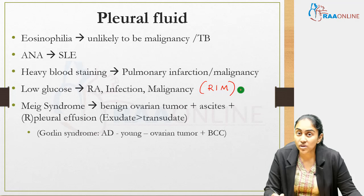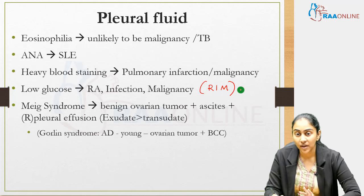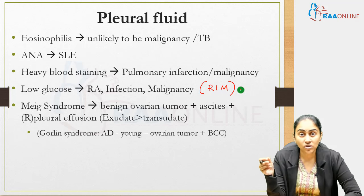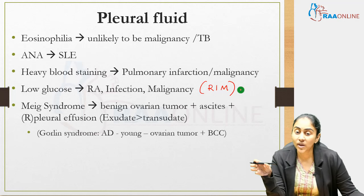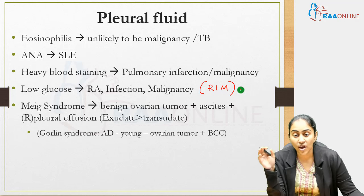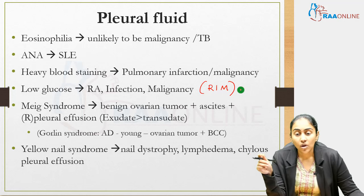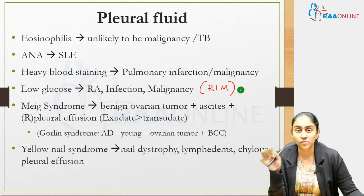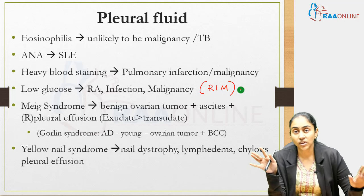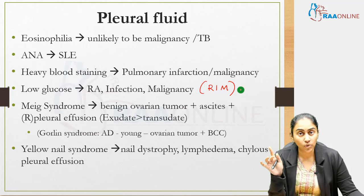Two syndromes associated with pleural effusion: Meigs syndrome — right-sided exudative pleural effusion with a benign ovarian tumour and ascites. Yellow nail syndrome — chylous pleural effusion with lymphedema and nail dystrophy. Also note Gorlin syndrome: a young patient with strong family history (autosomal dominant), ovarian tumour, and basal cell carcinoma.